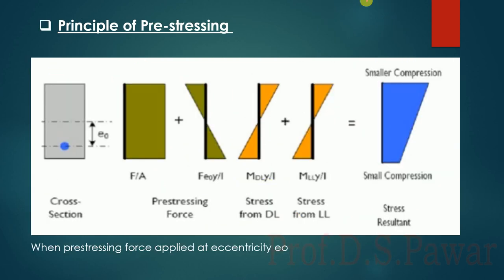Now we look at the principle of pre-stressing again, but with a changed condition in the rectangular beam. Earlier we provided the tendon at the center, but now we are going to provide the tendon with some eccentricity, E₀. Due to this eccentricity, compression forces are going to be created.